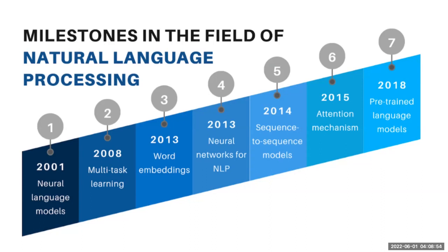Part of speech tagging, like classification of words depending on whether they're a verb, noun, or adjective. In 2013, word embeddings were popularized. Word embedding techniques are algorithms that convert words or linguistic representations in general into mathematical representations so that machines can operate on them.